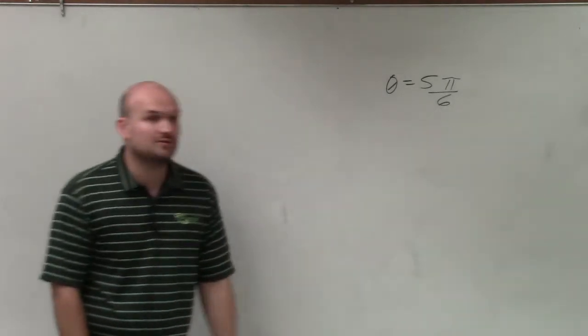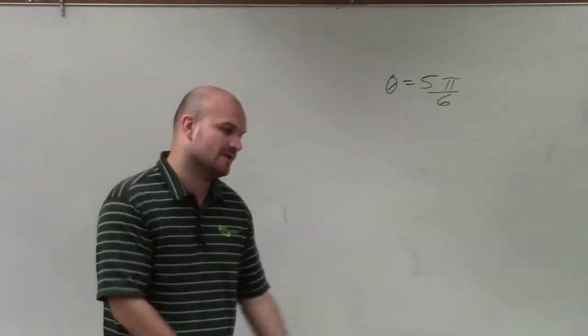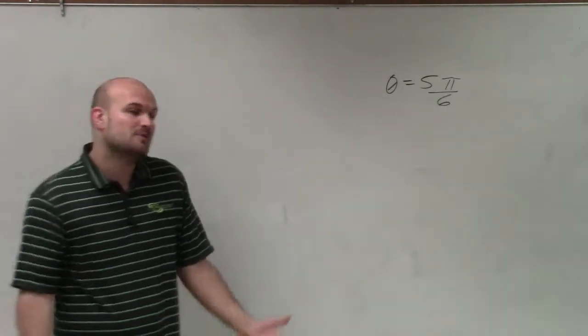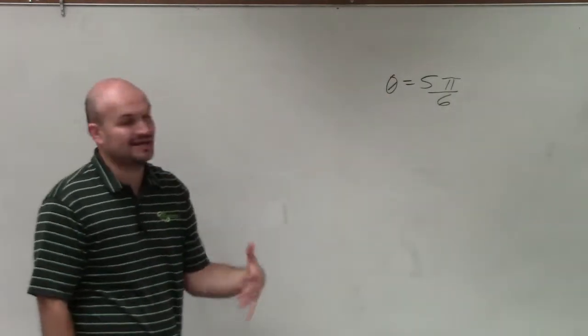Welcome. All right, so what I have is theta equals 5π over 6. And in this example, what I want to do is find two coterminal angles, the smallest positive and the smallest negative angle.